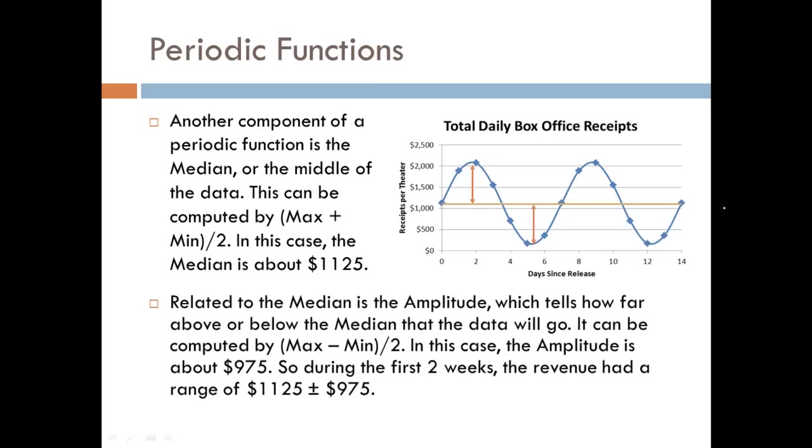And related to the median, we have something called the amplitude, and the amplitude represents how tall our function is. So a larger amplitude will give us a taller graph. The amplitude represents the distance from the median to the top or the bottom of the graph. It's pretty easy to compute. If you know the maximum and the minimum value, you subtract them, maximum minus min, and divide by two. In this case, the amplitude is about $975.